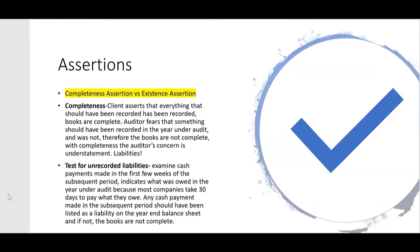Within five seconds I know whether they're ready to pass audit or not. They need to tell me that completeness is where the client asserts that everything that should have been recorded on the financial statements at year-end has been recorded — that the books are complete. The auditor, however, fears that something should have been recorded in the year under audit and was not. So with completeness, the auditor's concern is understatement, especially with regard to liabilities.